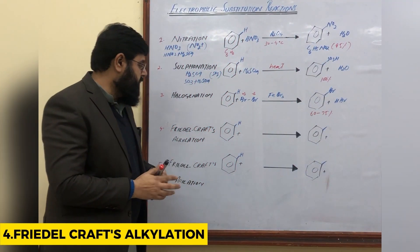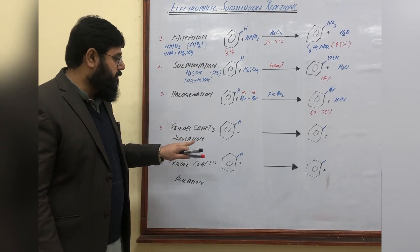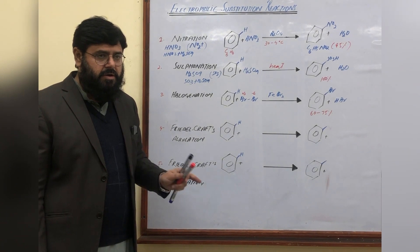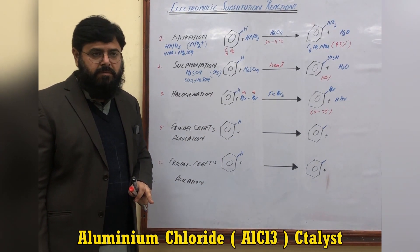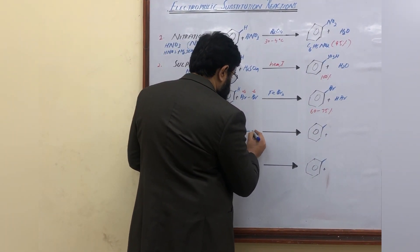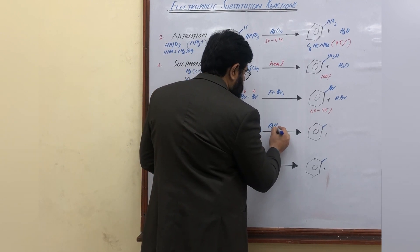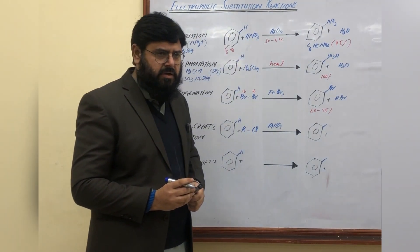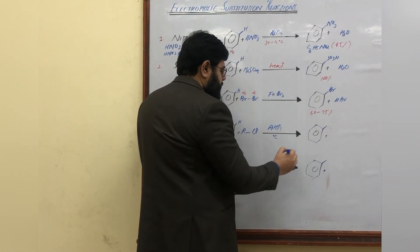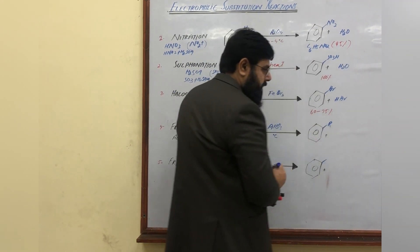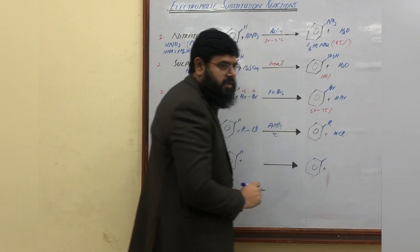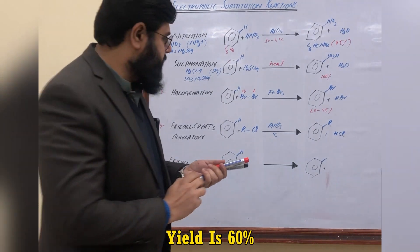The next reaction is Friedel-Crafts alkylation. In Friedel-Crafts alkylation, alkyl halides are treated with benzene in the presence of aluminium chloride (AlCl₃) as catalyst. This reaction can proceed at zero degrees Celsius, and the product is alkylbenzene, with HCl as a byproduct. The yield of this reaction is 60 percent.